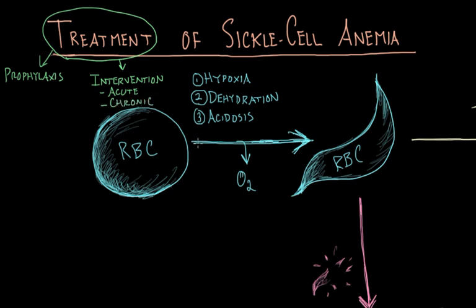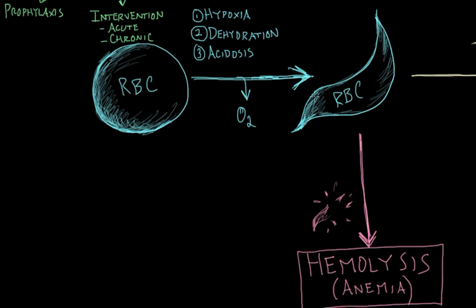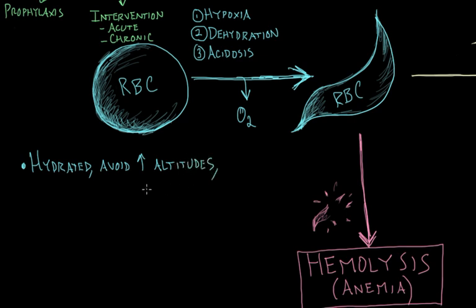Starting with the first step — the sickling — how do we prevent patients from experiencing symptoms? We can make sure that patients are well hydrated and that they avoid things like high altitudes, which can lead to hypoxia. If there are infections, we've got to make sure those are treated promptly, because if not, that can lead to acidosis.